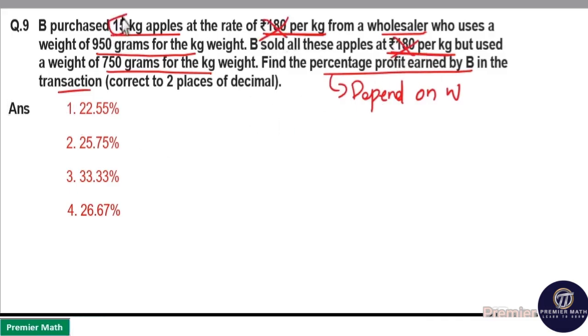So we can ignore the price here. He bought total 15 kilogram apples but his wholesaler cheated him. He is only giving 950 grams for each 1 kilogram he bought. B is also cheating his customers because he is only selling 750 grams instead of 1 kilogram.